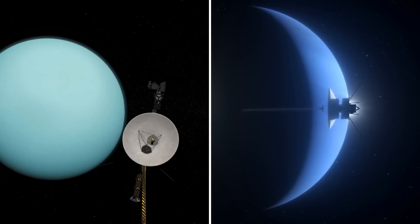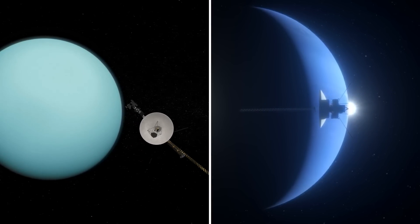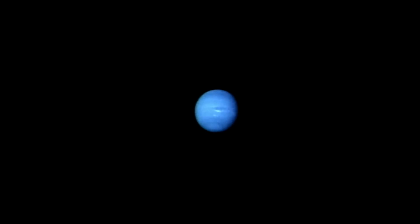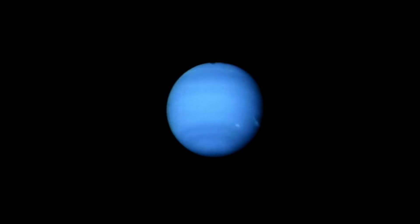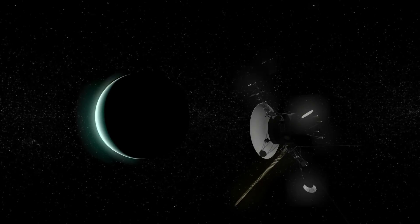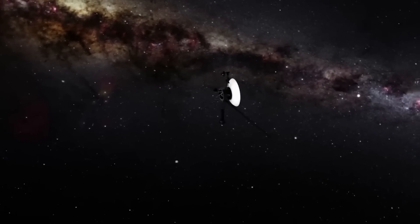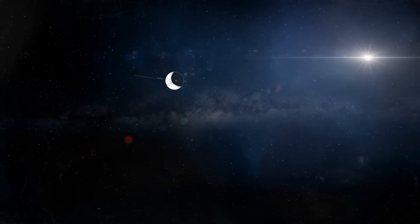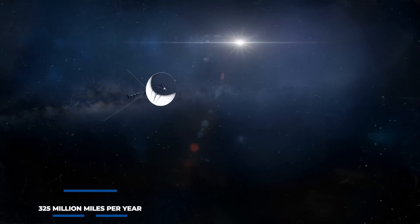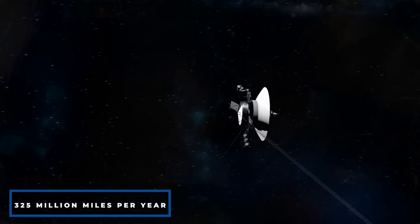No other spacecraft has revisited Uranus and Neptune after Voyager 2's journey. However, scientists have still been able to observe and study incredible phenomena on these planets from afar. Following the completion of these missions, the Voyager planetary mission came to a halt, and both Voyager 1 and Voyager 2 were sent outside of our solar system at an astonishing speed of 325 million miles per year.